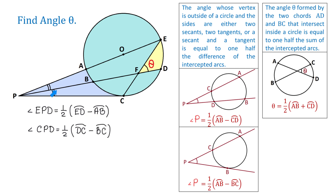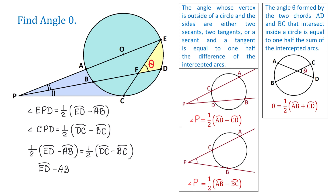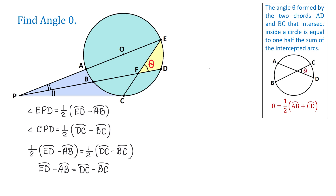Because these two angles are equal, these expressions are also equal. We can write that one-half of the difference of ED and AB equals one-half the difference of CD and BC. Multiplying both sides by two gives us ED minus AB equals DC minus BC. Adding AB to both sides and BC to both sides, so that on both sides we have a sum instead of a difference, we get ED plus BC equals DC plus AB.